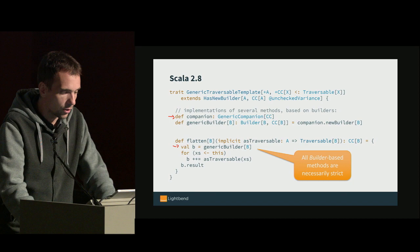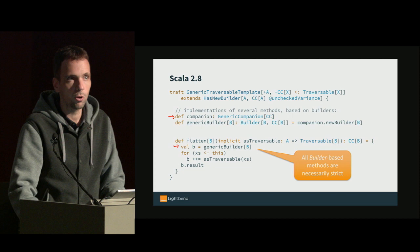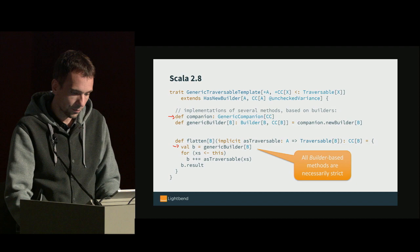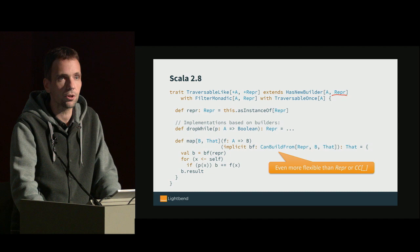That means all the default implementations in traits like GenericTraversableTemplate are not usable for implementing Stream. So Stream has to override pretty much every single method in the collections library. The other helper trait is TraversableLike, and it has the specific collection type — Traversable of A in our case. Implementations of methods are again based on builders, and in the case of dropWhile we return the specific type, giving us the most specific type back.